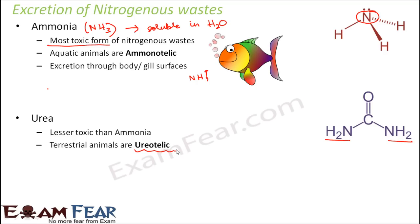Aquatic animals do not mind excreting ammonia dissolved in water, because every time you excrete ammonia you end up throwing water outside your body — ammonia is soluble in water. But terrestrial animals have limited water inside their bodies and are not living in water, so they do not have that much abundance of water. They want to conserve water. If they excreted in the form of ammonia they would also lose a lot of water. That is why terrestrial animals excrete their wastes in the form of urea.